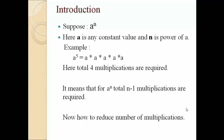Suppose we have one number a raised to n. Here a is a constant number and n is a power of a. Just take one example: suppose a raised to 4. If you want to find the solution of a raised to 4, it means that we have a into a into a into a into a. So when you find the number of multiplications for a raised to 4, total 4 number of multiplications are required — the first, second, third, and fourth.